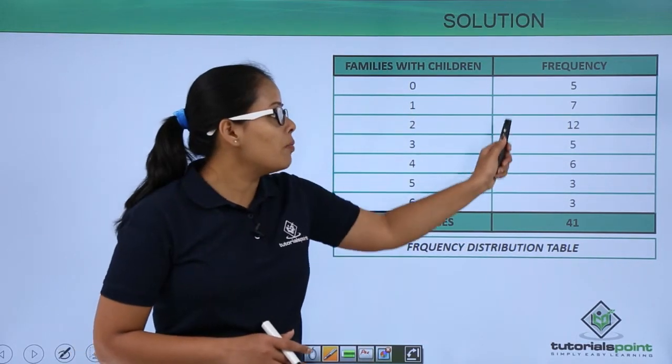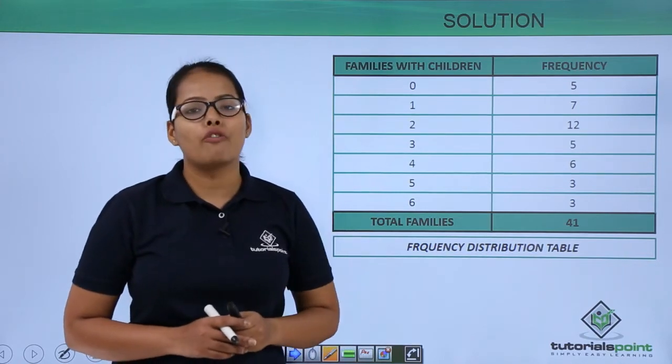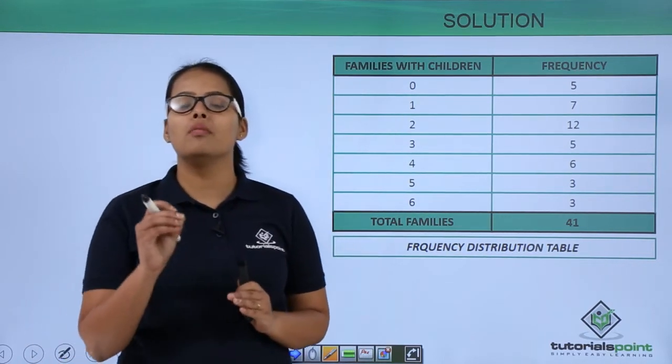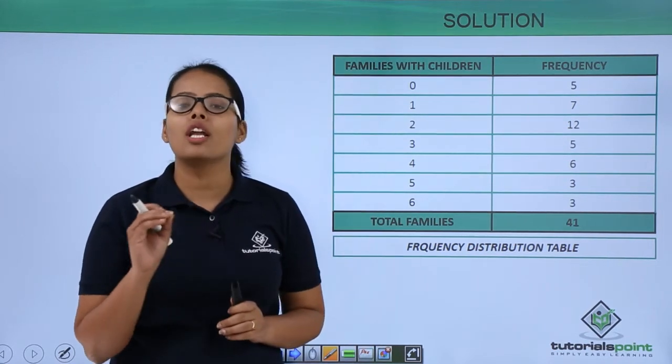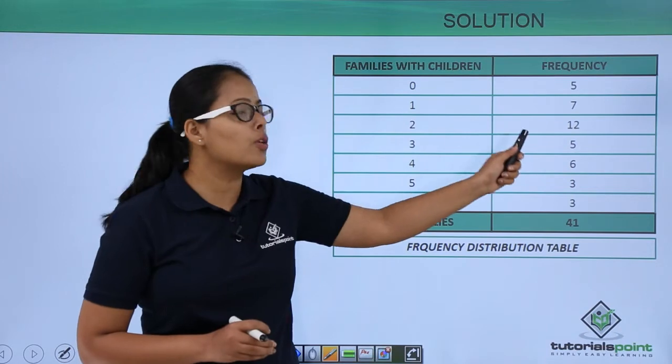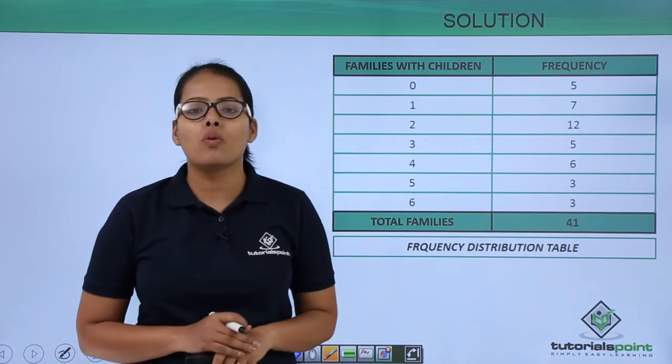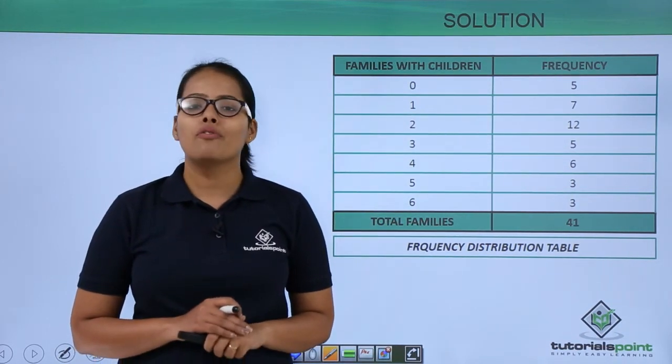So when you sum this frequency, you will get 41 instead of 40. So there is actually a little mistake in the RD Sharma. You need to correct that—there are 41 families, not 40 families, because when you sum this frequency, you are going to get 41, not 40.